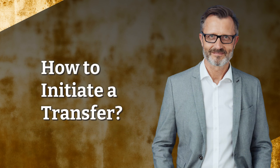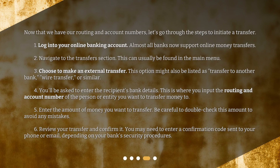How to initiate a transfer? Now that we have our routing and account numbers, let's go through the steps to initiate a transfer. Step 1: Log into your online banking account — almost all banks now support online money transfers. Step 2: Navigate to the transfers section, which can usually be found in the main menu. Step 3: Choose to make an external transfer. This option might also be listed as 'transfer to another bank,' 'wire transfer,' or similar.